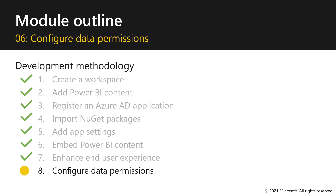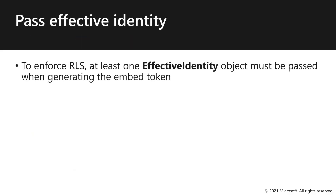In this Part 2 video, we will describe how to pass effective identity so your app can effectively enforce the intended data permissions. To enforce row-level security, at least one effective identity object must be passed when generating the embed token. If you try to generate an embed token that has row-level security and you don't specify effective identity, you won't be able to render the report.